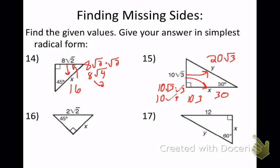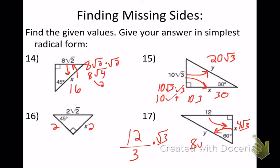Number 16: hypotenuse is 2 square root of 2, so both legs are 2. Number 17: long side is 12 — find short side by dividing 12 by 3 and multiplying by square root of 3, giving 4 square root of 3. Double it for the hypotenuse: y equals 8 square root of 3.